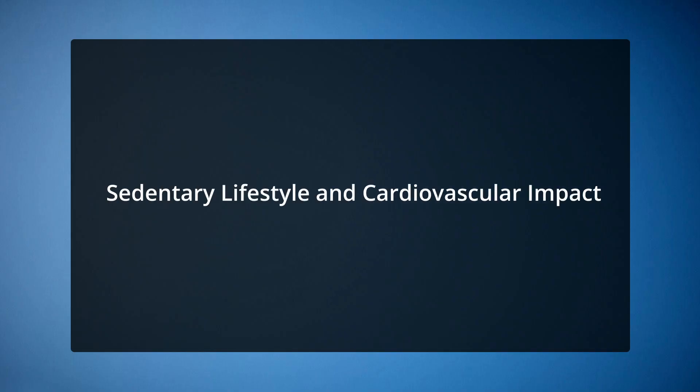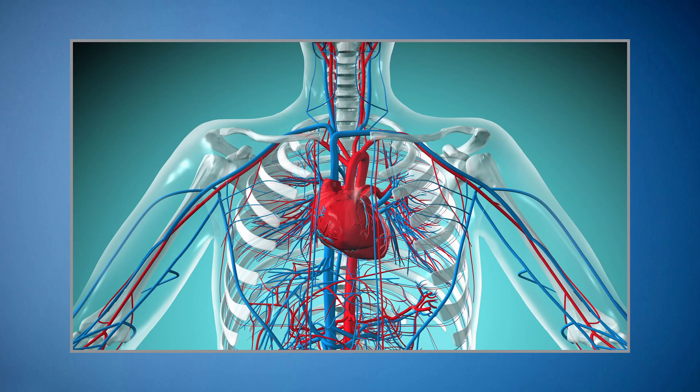Let us now discuss sedentary lifestyle and cardiovascular impact. The cardiovascular system contains the heart, arteries and veins. It is in charge of pumping blood throughout the body, providing oxygen to cells and removing waste products like carbon dioxide. When the body is at rest, the heart muscle circulates blood throughout the body in 20 seconds through the process of contraction and relaxation. Smoking, eating poorly and being sedentary are all harmful lifestyle choices that contribute to cardiovascular disease.